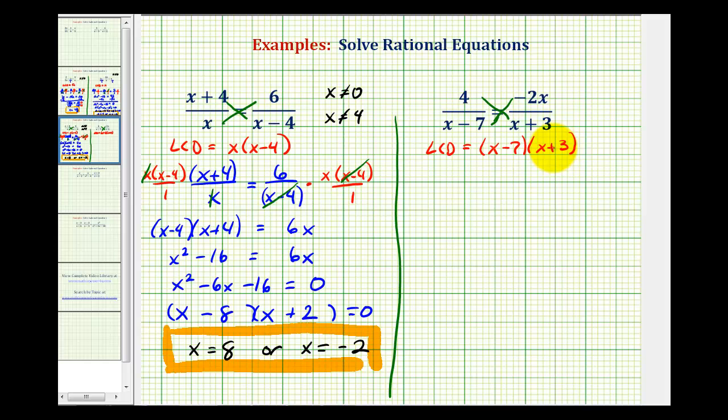So again, 4 times the quantity x plus 3 must equal negative 2x times the quantity x minus 7. Again, just keep in mind this only works when we have a proportion where one fraction equal to another fraction.